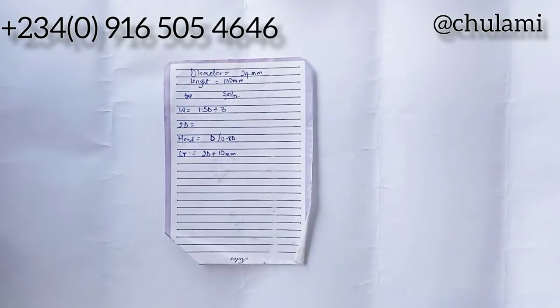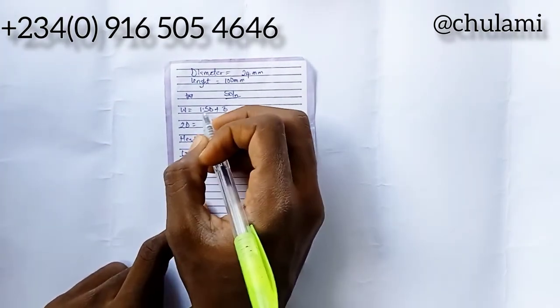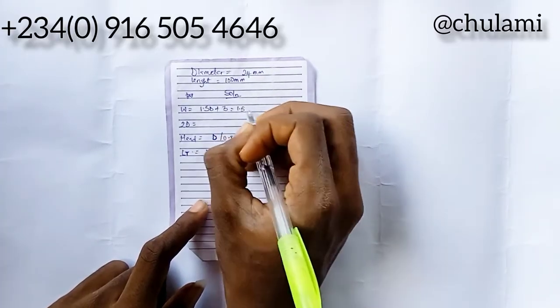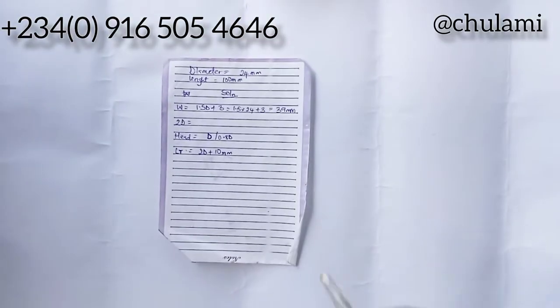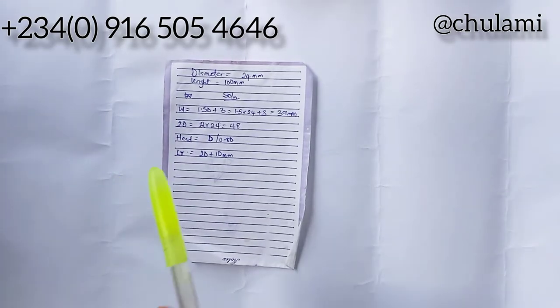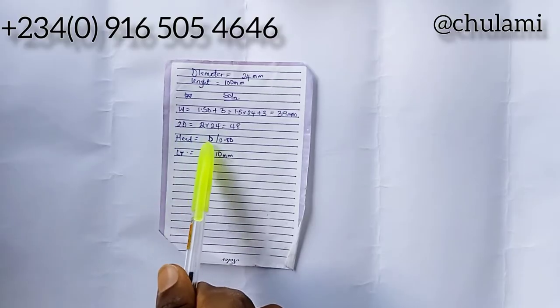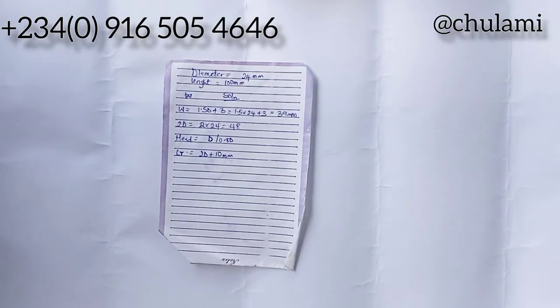The formula is 1.5D plus 3, which is equal to 1.5 times 24 plus 3, which gives us 39. Then we'll have 2D, that's 2 times diameter. So 2D gives us 48. Now for the head of the bolt, for standard approximation measurements we use 0.8D.